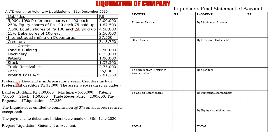After the adjustments: the preference dividend is in arrears for 2 years. Creditors include preferential creditors of 38,000. The assets were realized as under — land and building, machinery, patent, stock, trade receivable. The expenses of liquidation are 27,250.